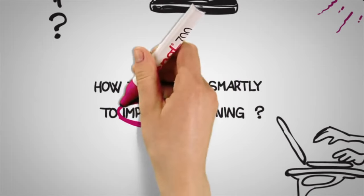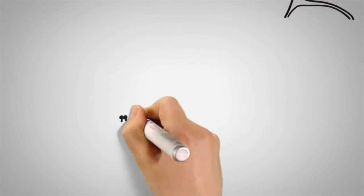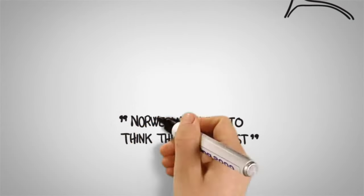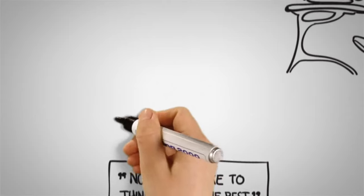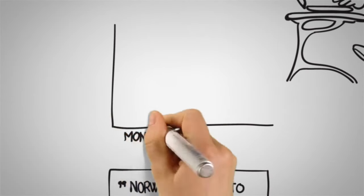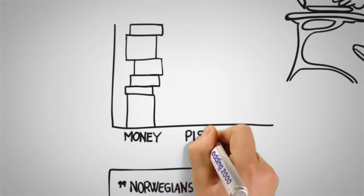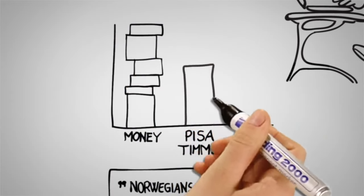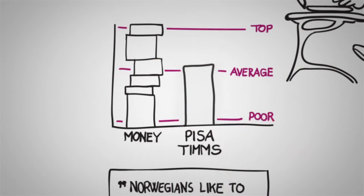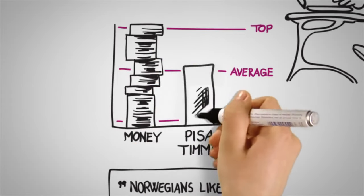But why is better learning important? Well, Norwegians like to think they are the best. However, the truth is that even though Norway spends more money on schools than most countries, Norwegian students score average on international PISA and TIMSS tests. Why is it like that? And what are the consequences?